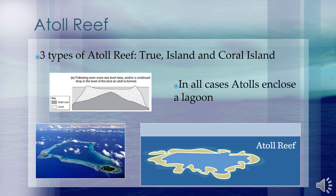Atoll reefs rise from submerged volcanic foundations. They are essentially indistinguishable in form and species composition from barrier reefs, except that they are confined to the flanks of submerged oceanic islands, whereas barrier reefs may also flank continents. Over 300 atolls are present in the Indo-Pacific, but only 10 are found in the Western Atlantic.